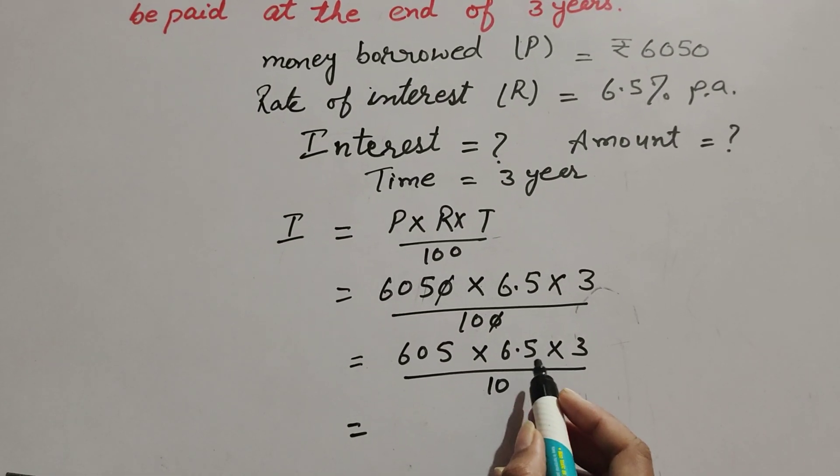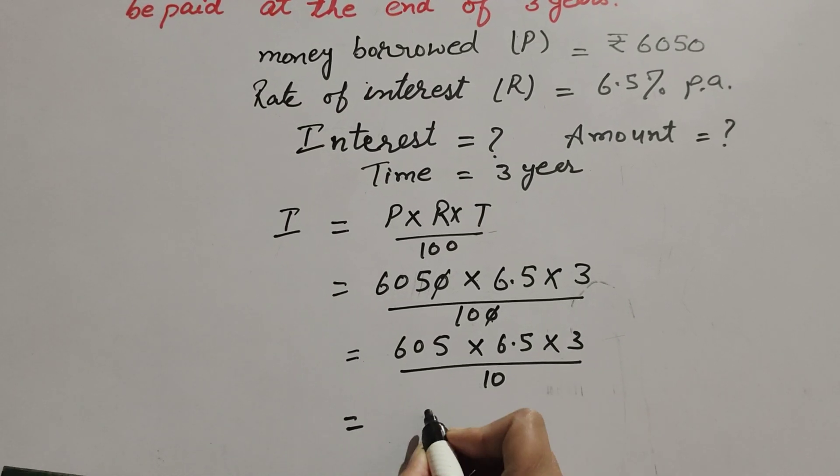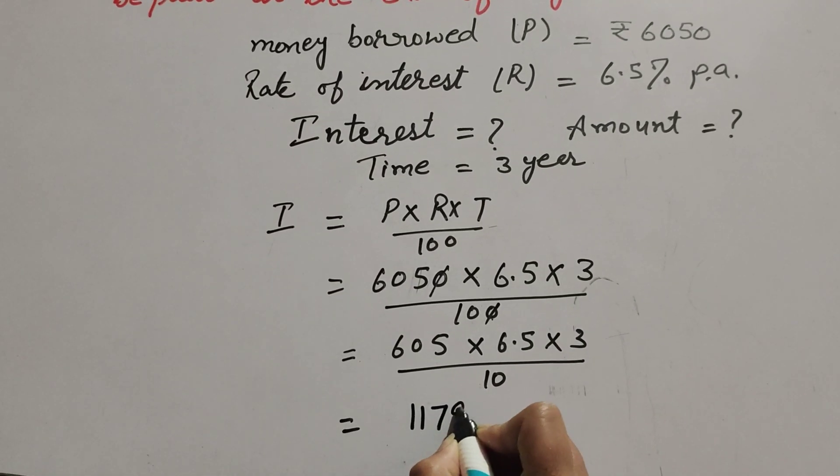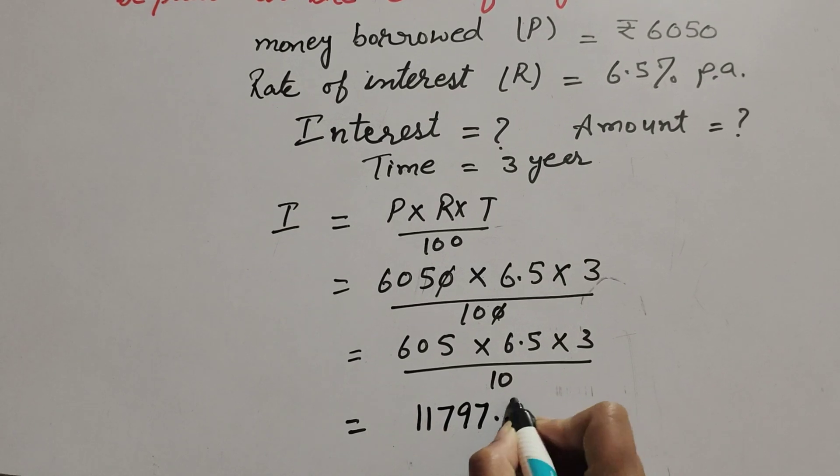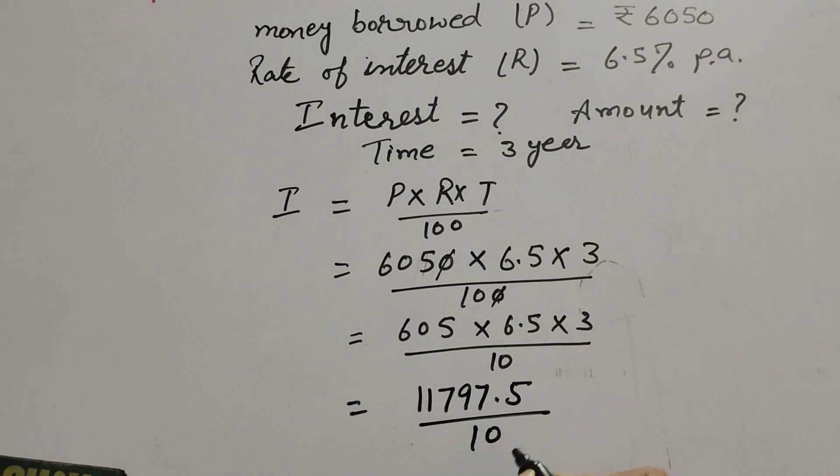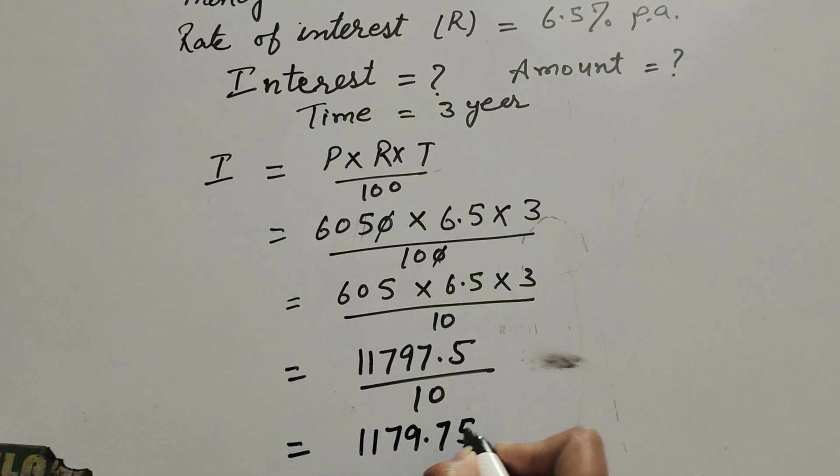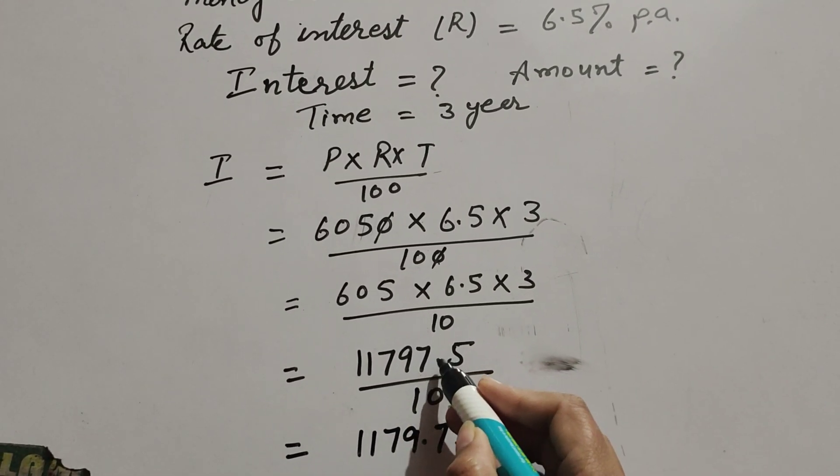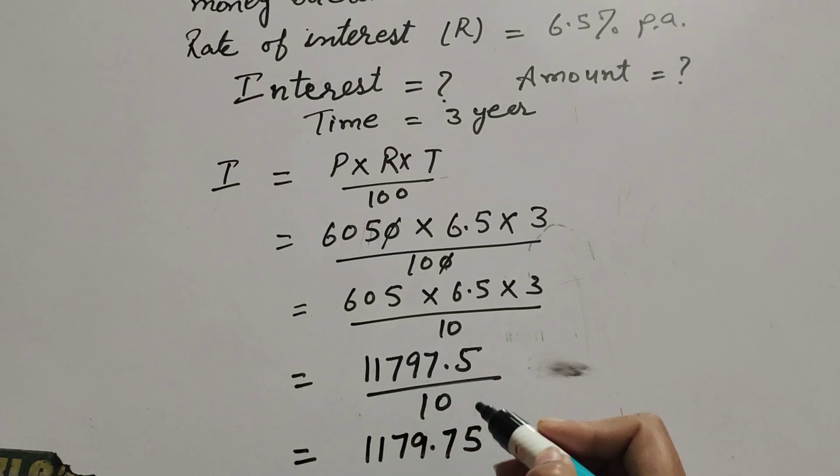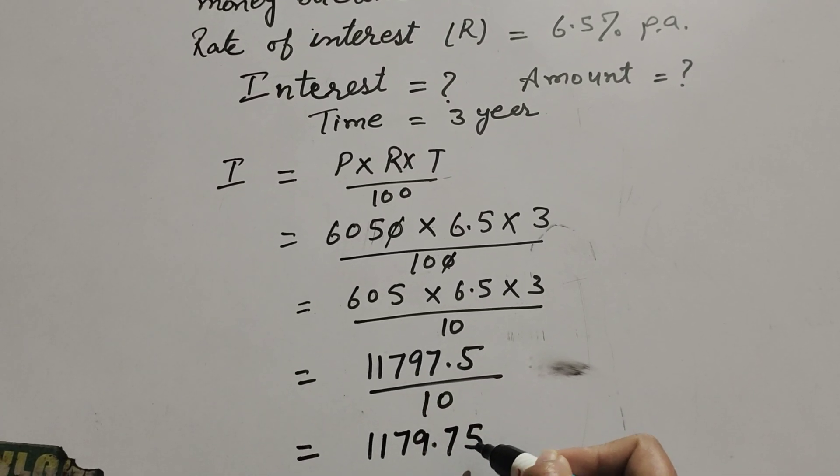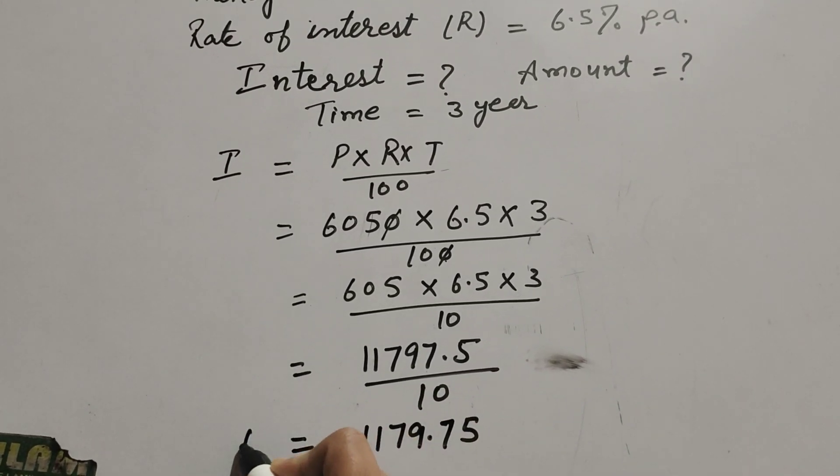605 multiply by 6.5 multiply by 3, we get answer 11797.5 over 10, and it is equal to 1179.75. So interest paid after three years is 1179.75.